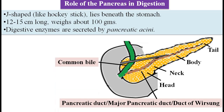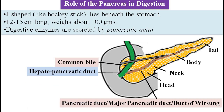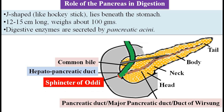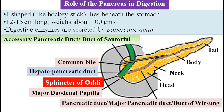The pancreatic duct joins the common bile duct to form the hepato-pancreatic duct, which has the sphincter of Oddi. When the sphincter of Oddi opens, pancreatic enzymes and bile are released into the duodenum at the major duodenal papilla. The pancreas also has an accessory pancreatic duct, or the duct of Santorini, which opens into the duodenum at a point called the minor duodenal papilla.